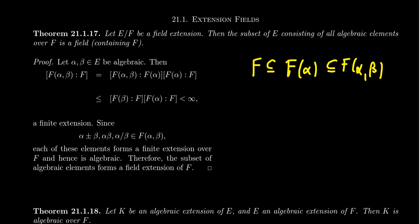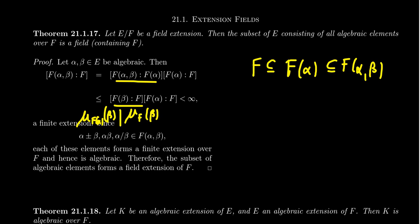Using the intermediate field F adjoin alpha, we can factor the degree of the extension F adjoin alpha and beta over F as: the degree of F adjoin alpha beta over F adjoin alpha, times the degree of F adjoin alpha over F. Clearly, F adjoin alpha over F is a finite number, because alpha is algebraic — a simple algebraic extension is always a finite extension, as proved in lecture 26. Now consider F adjoin alpha beta over F adjoin alpha: its degree cannot be worse than the degree of F adjoin beta over F, because the minimal polynomial of beta over F must be divisible by the minimal polynomial of beta over F adjoin alpha.